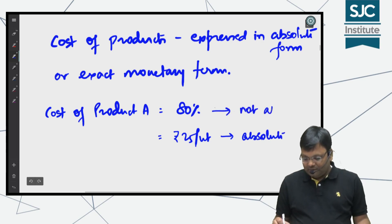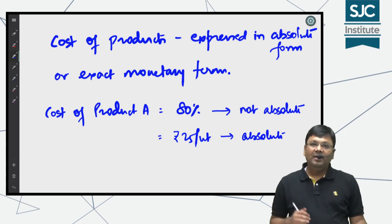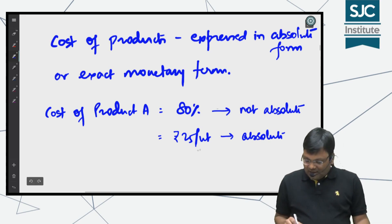Absolute forms are clearer to understand, so they help in managerial decision making—whether you're really making profits or not. In absolute form, you can take breakup in terms of material, labor, and overhead.